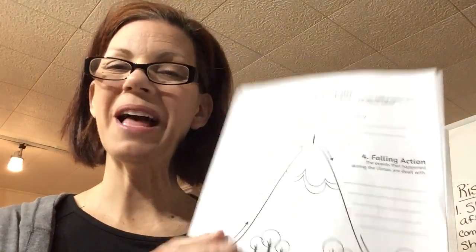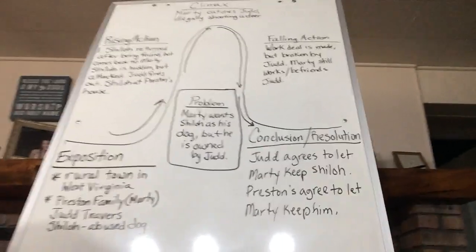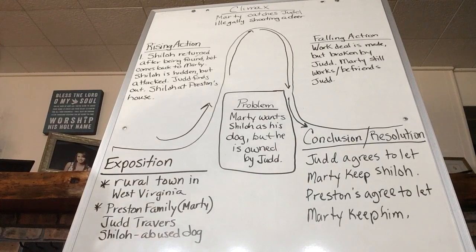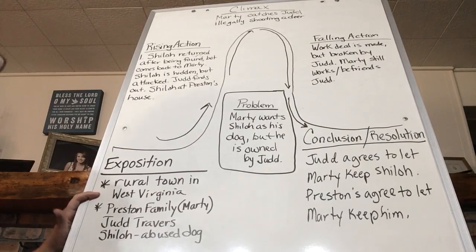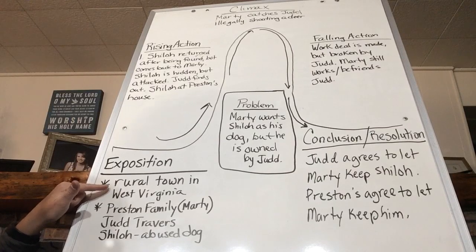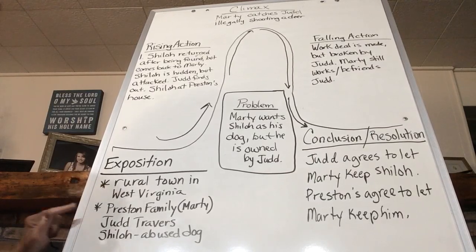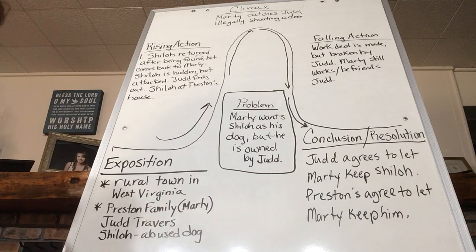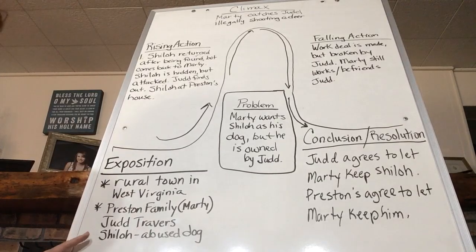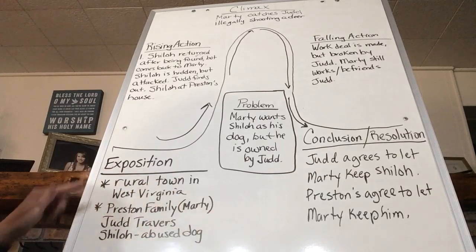We're going to start with the exposition, which is really just the setup of the story. It means: who are the characters, what is the setting, and how is the storyline established? We know that the story takes place in a rural town — rural means country, as opposed to city — in West Virginia. The main characters are the Preston family, and in particular Marty Preston, our main character. We also have Judd Travers, the antagonist, and the story pivots around an abused dog named Shiloh.